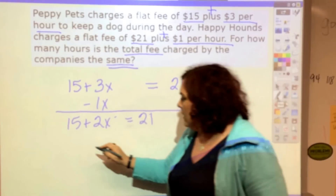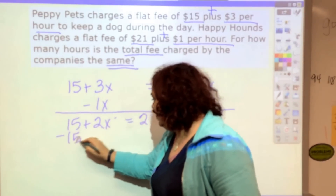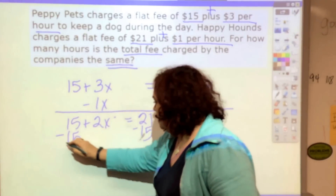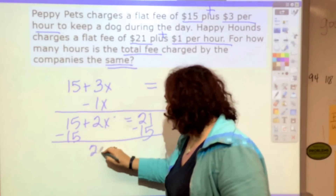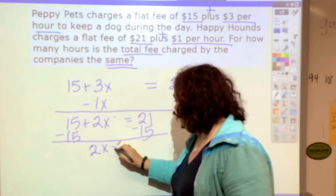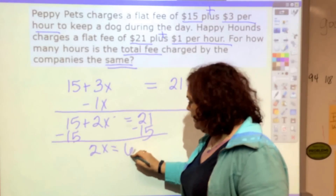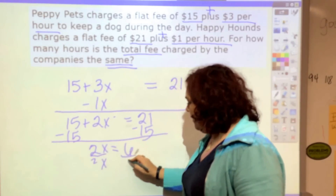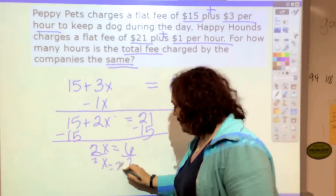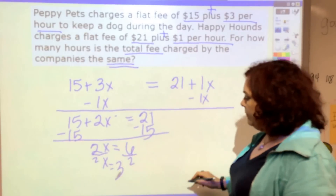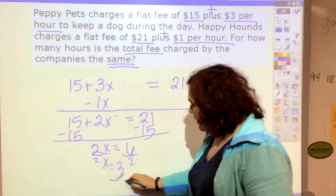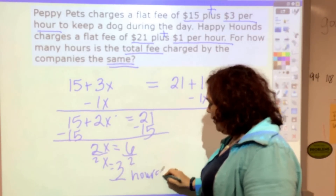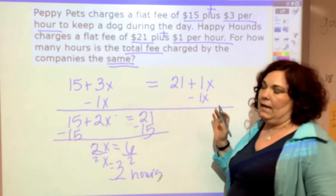I'm going to get rid of the 15 so I can get X by itself. Subtract 15 from both sides and I get 2X equals 6. Divide both sides by 2 — X equals 3. That means 3 hours. In 3 hours, those prices would be the same.